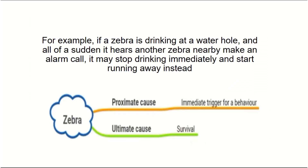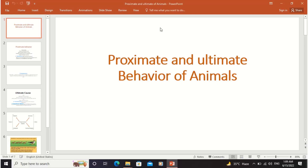The zebra may stop drinking immediately and start running away. The proximate cause is that the alarm call immediately triggers the escape behavior — it gives an alarm signal to group members, causing the zebra to run away. The ultimate cause is that this behavior increases the zebra's survival value. That's all for today, thank you.